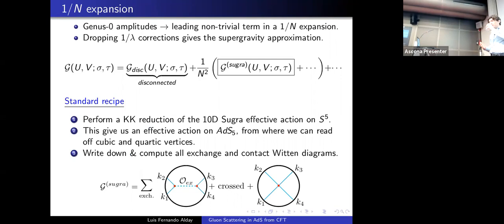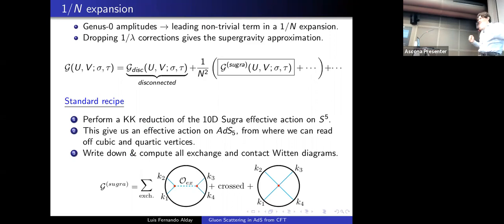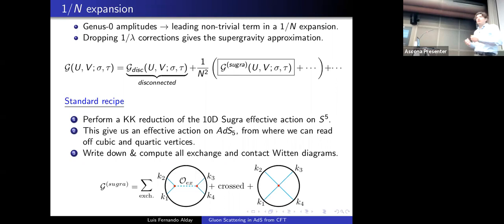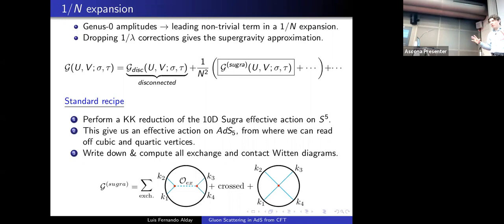We focus on genus-zero amplitudes, which are the easiest but already highly non-trivial. Genus-zero amplitudes correspond to the leading non-trivial term in the 1/N expansion. Additionally, taking the limit where λ is large and dropping all 1/λ corrections gives the correlator in the supergravity approximation — and this is the aim of this talk.